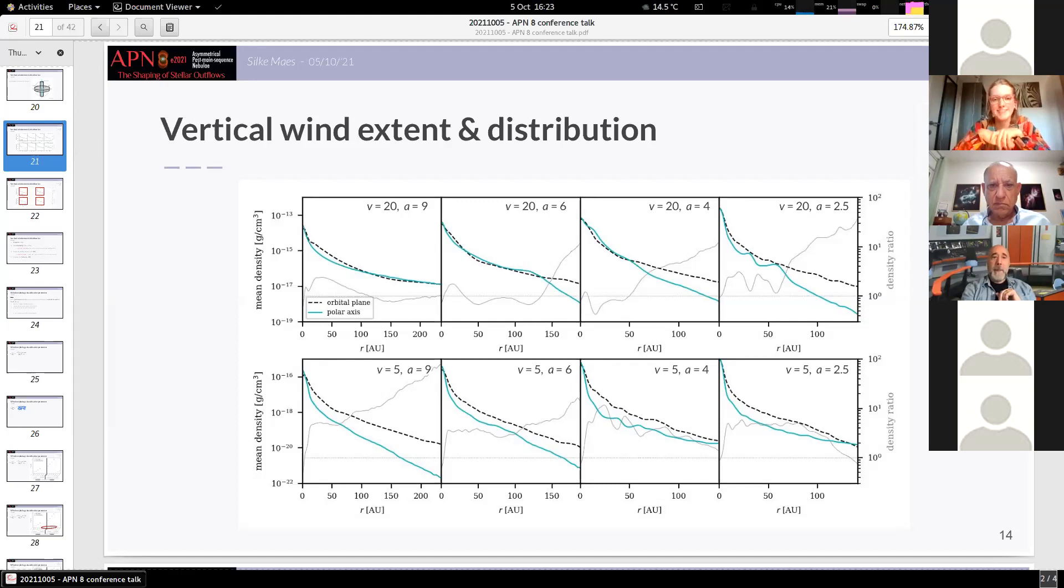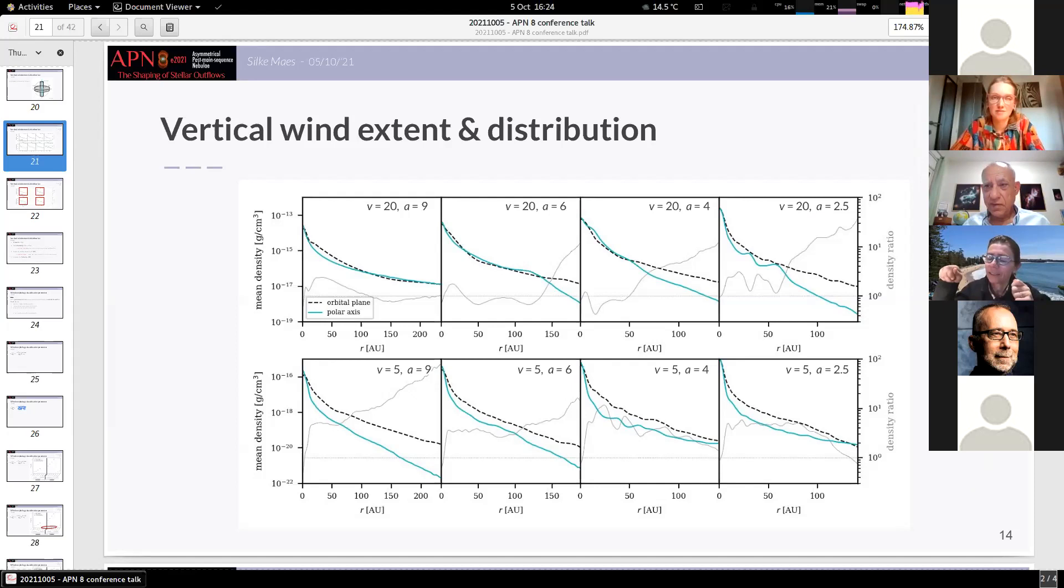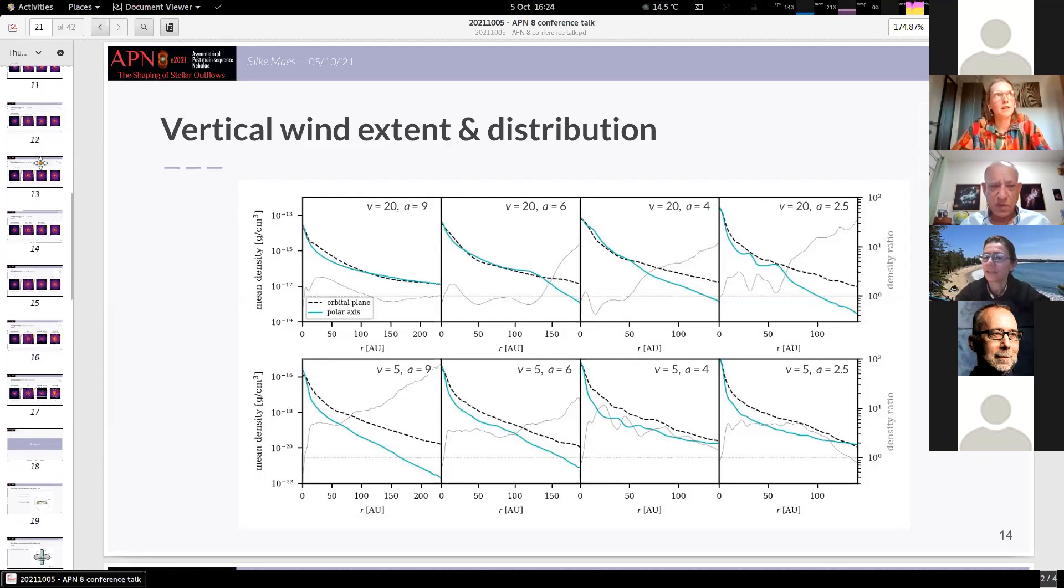Okay, we move to Australia. Hi, thank you, Silke. That was very nice. Is your companion fixed or is it free to move? It's free to move, right? Because you have reflex motion of the AGB star. So the orbital distance is free. You're not keeping it at a constant value.